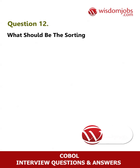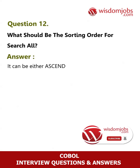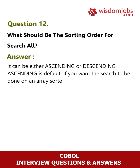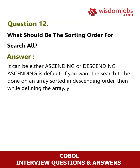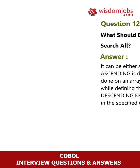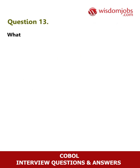Question 12: What should be the sorting order for SEARCH ALL? Answer: It can be either ascending or descending. Ascending is the default. If you want the search to be done on an array sorted in descending order, then while defining the array you should give the DESCENDING KEY clause. You must load the table in the specified order.